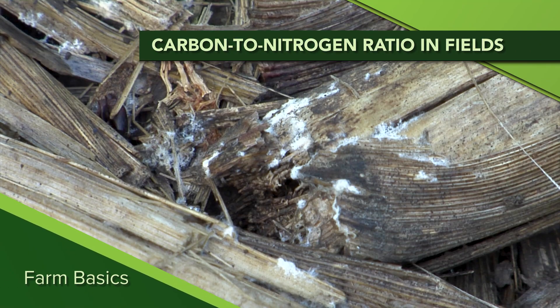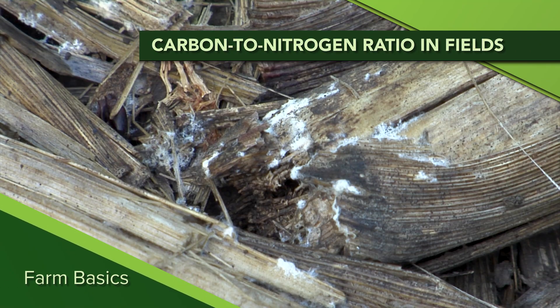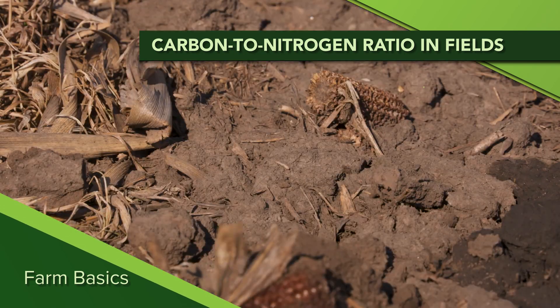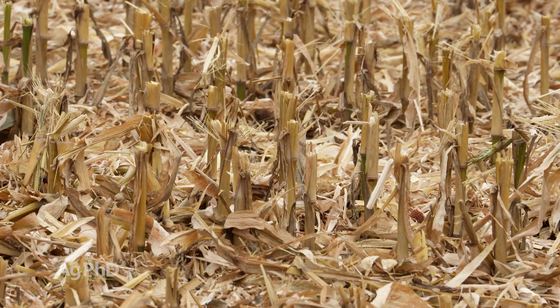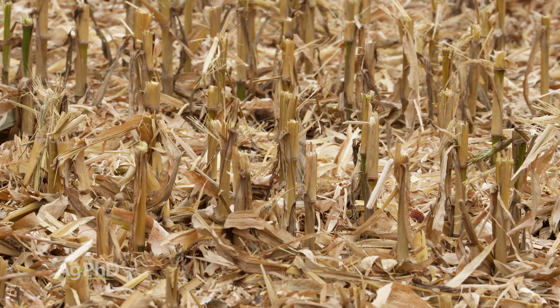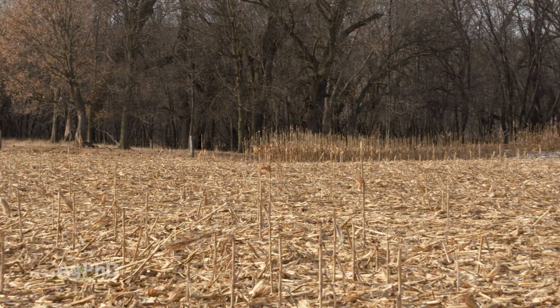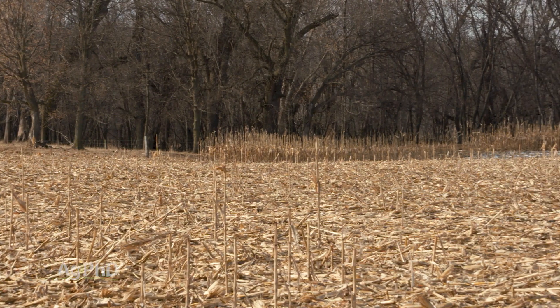During our Farm Basics time today we're going to talk about the carbon to nitrogen ratio and what that means exactly out in fields. When you're looking at a field like this one, which had corn in it as the previous crop, you see lots of residue out there, and we get questions: what does it take for that residue to break down?